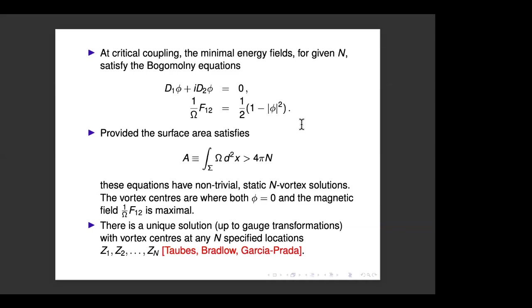It's well-known through work of Bradlow and García-Prada that there are no vortex solutions to this pair of equations unless the area of the surface Σ is big enough. You can see this by integrating over the surface: the Chern number N appears on the left, and the area appears on the right with a minus sign — so N must be less than the area, up to factors of 2π.